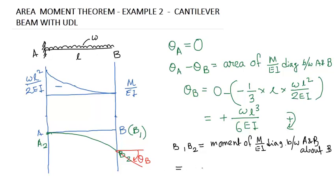So, moment of M by EI diagram between A and B about B. This equals the moment. This area we have found out is wL cubed by 6EI. To find out the centroid, this type of shape has a CG distance from here to here of 3 by 4 L. So area wL cubed by 6EI into 3 by 4 L equals minus wL to the fourth by 8EI.